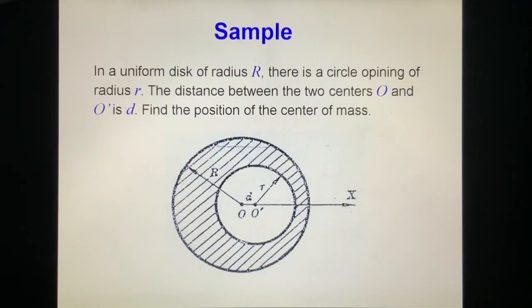Sample: In a uniform disk of radius big R, there is a circular opening of radius small r. The distance between the two centers O and O' is d. Find the position of the center of mass of this piece.